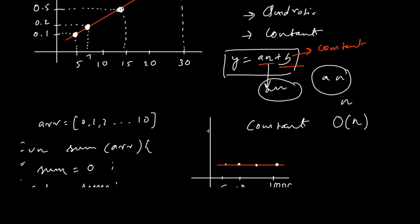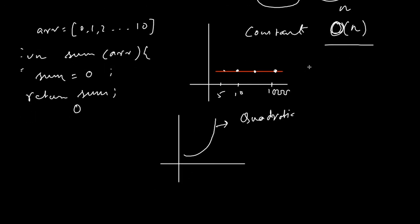So O(n) will be the time complexity of this function — the function that returns the sum of all elements. We find the term increasing most rapidly as we increase input size, consider its coefficient, and write it as Big O — O, open parenthesis, n, close parenthesis. So O(n) is the time complexity for this one.